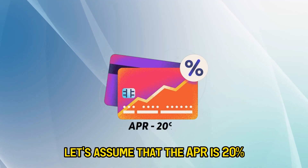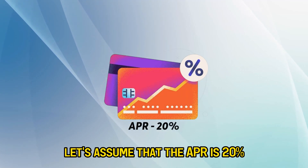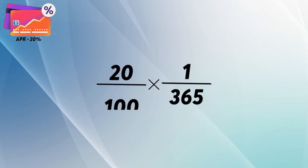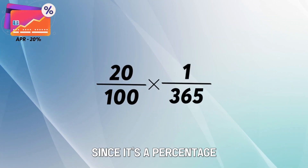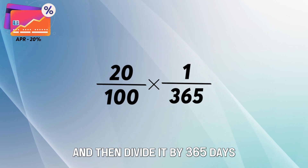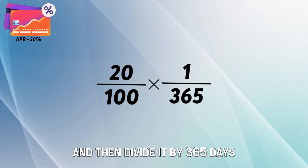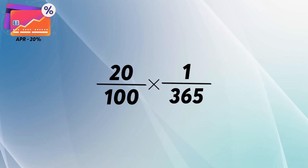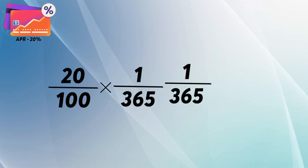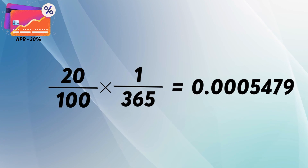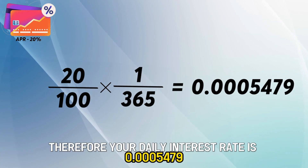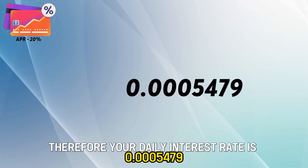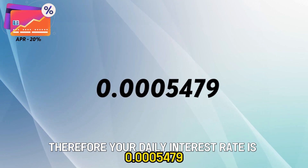I'll use an example to show you how to calculate daily interest rates from APR. Let's assume that the APR is 20%. To convert this to a daily interest rate, divide it by 100, since it's a percentage, and then divide it by 365 days. 20 divided by 100 divided by 365 is 0.0005479. Therefore, your daily interest rate is 0.0005479.